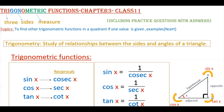Trigonometry is the study of relationships between the sides and angles of a triangle. In a right triangle, we have the opposite side, hypotenuse, and adjacent side. Sine x is opposite over hypotenuse, tan x is opposite over adjacent, and cos x is adjacent over hypotenuse. Once you know these three values you can easily calculate cosecant x, secant x, and cot x.